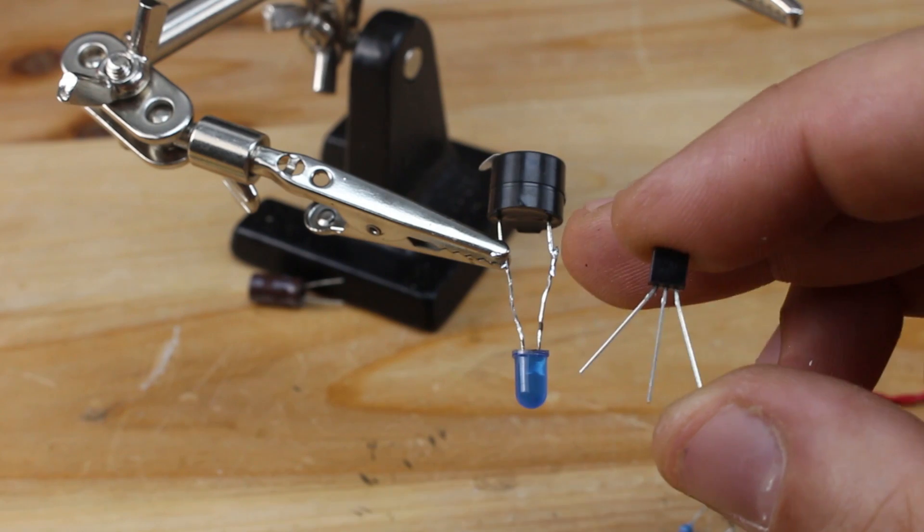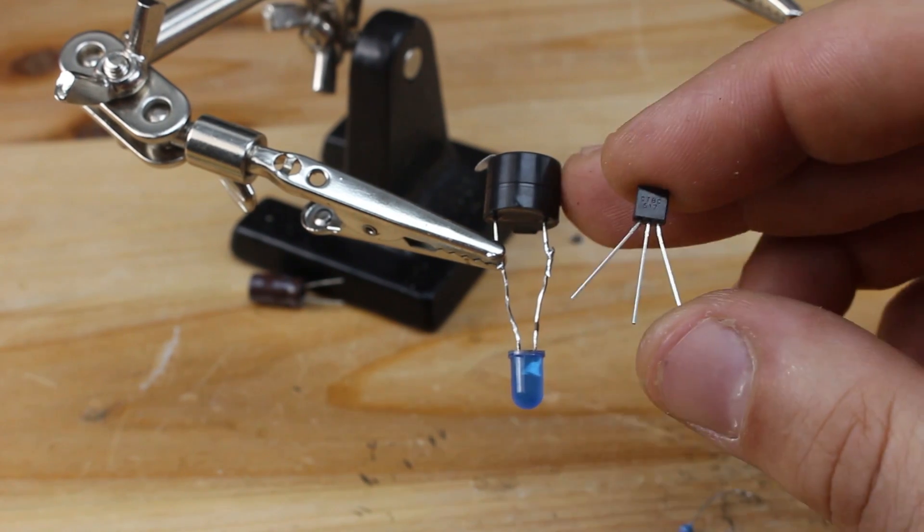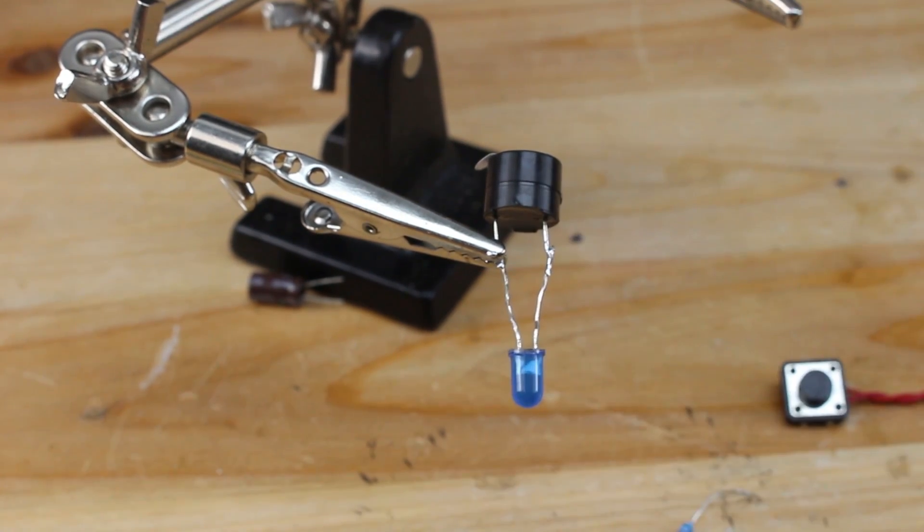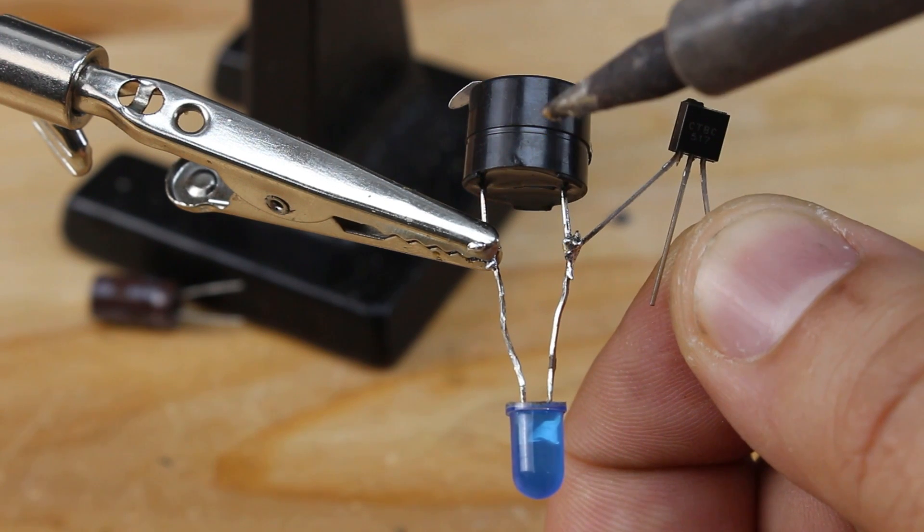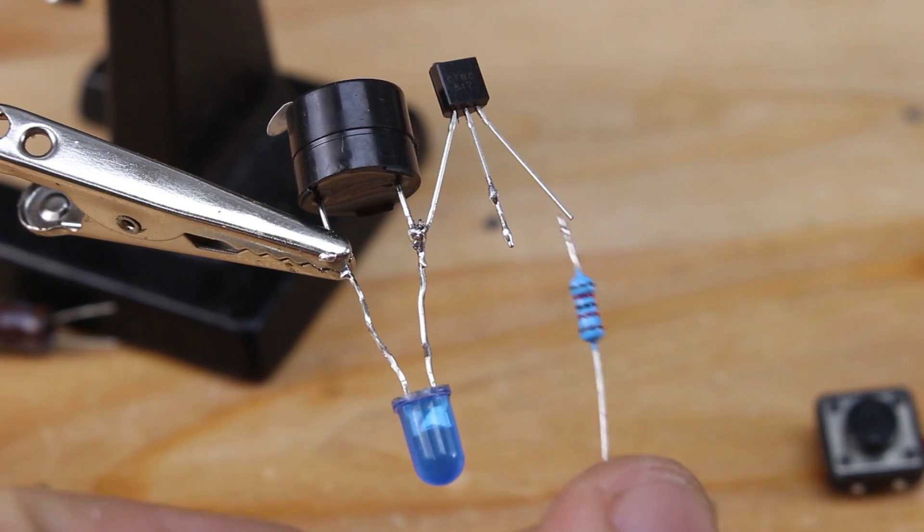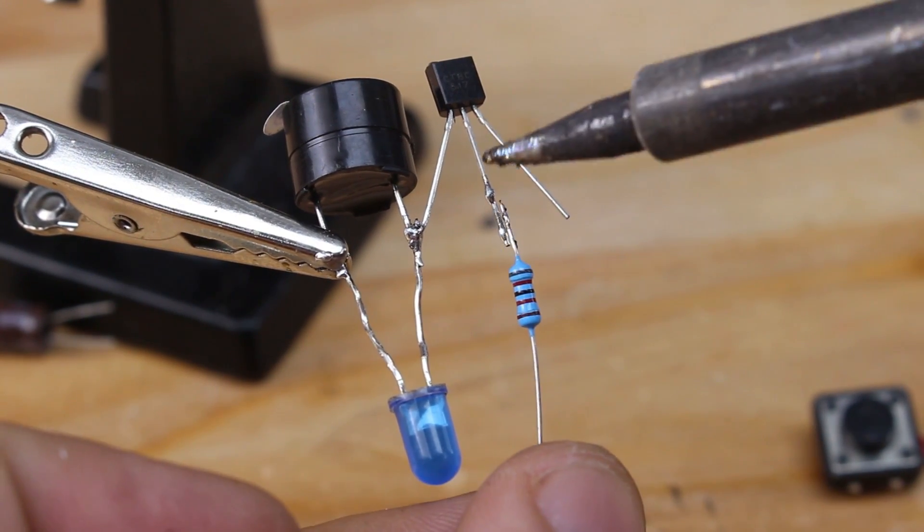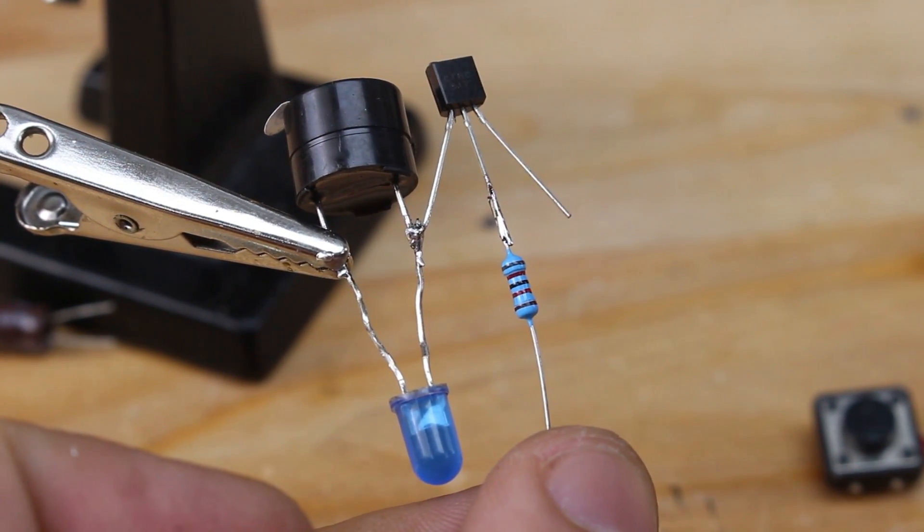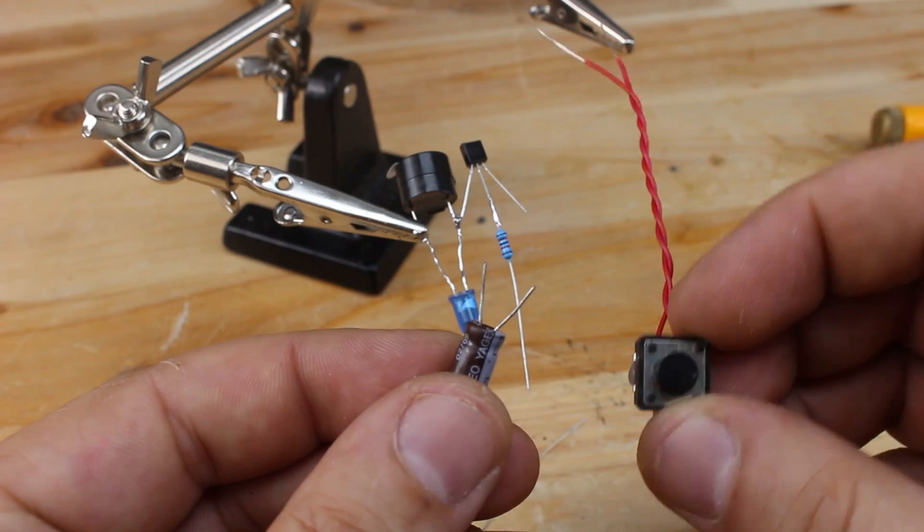Collector, we're going to solder to the negative terminal of piezo and LED. On transistor base, we're going to solder the 100 kilohm resistor.